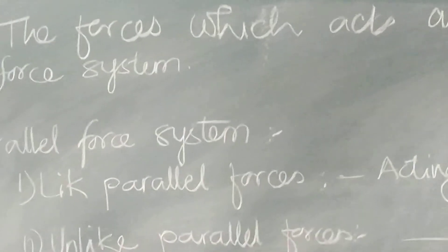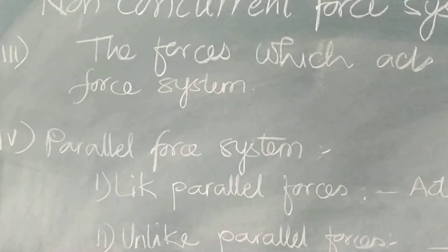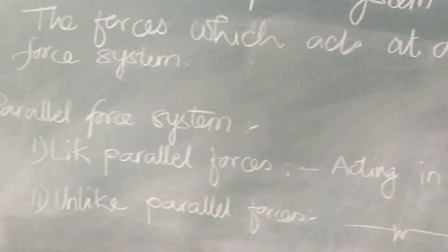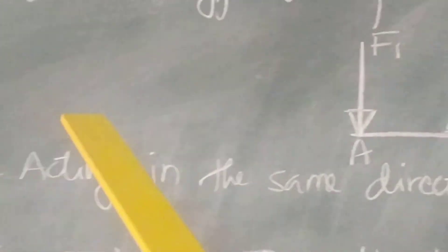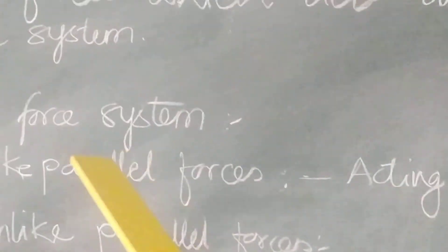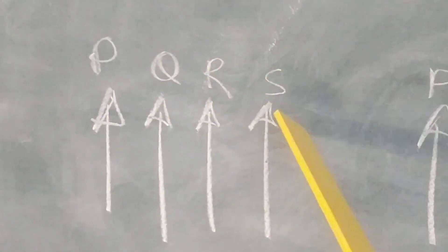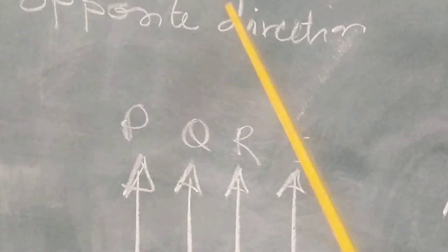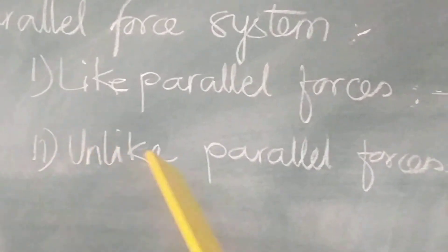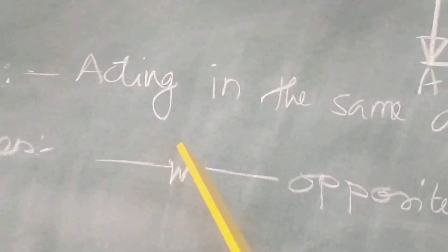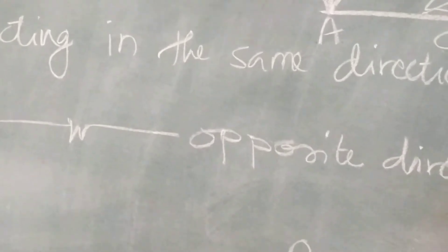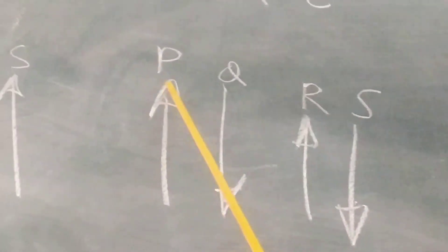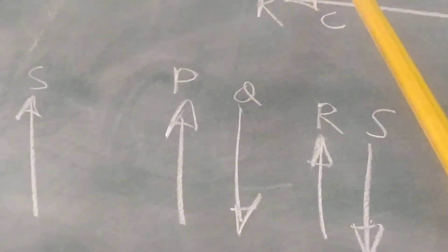In parallel force system, there are two different systems. First is like parallel forces — the forces which are acting in the same direction parallelly are known as like parallel force system. P, Q, R, and S are parallel forces acting in the same direction. Second is unlike parallel force system — the forces acting in the opposite direction parallelly are known as unlike parallel force system. Here P is acting upward, Q is downward, R is upward, and S is again downward.